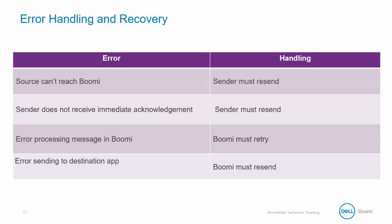Here are some possible errors around the web service process. If the source can't reach Boomi, then the sender must resend. If the sender does not receive immediate acknowledgement, then the sender must also resend. However, if the error is processing a message in Boomi, then Boomi must retry. And finally, if there is an error in sending to the destination app, then Boomi must resend the message.